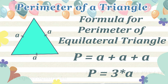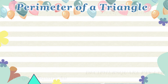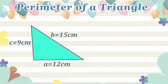Where the perimeter of an equilateral triangle is referred to as P, and the length of each side is referred to as A. Here is an example of a triangle — the length of each of the sides is as shown in the figure. What is the perimeter of this triangle?